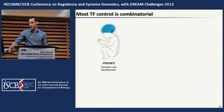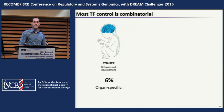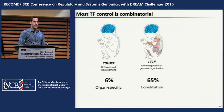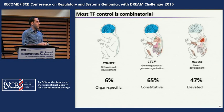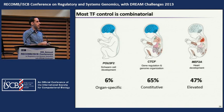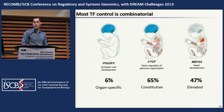A surprising finding was that only 6% of transcription factors display a pattern where they're expressed only in a single organ system. In contrast, 65% are constitutively expressed — detectable at low levels in all organs. However, 47% of transcription factors have broad expression but show a really high elevated level in certain organs. My prime example is MEF2A, which is broadly expressed but when knocked out in mice they don't develop hearts — it's expressed at three standard deviations above the average expression level in the heart.